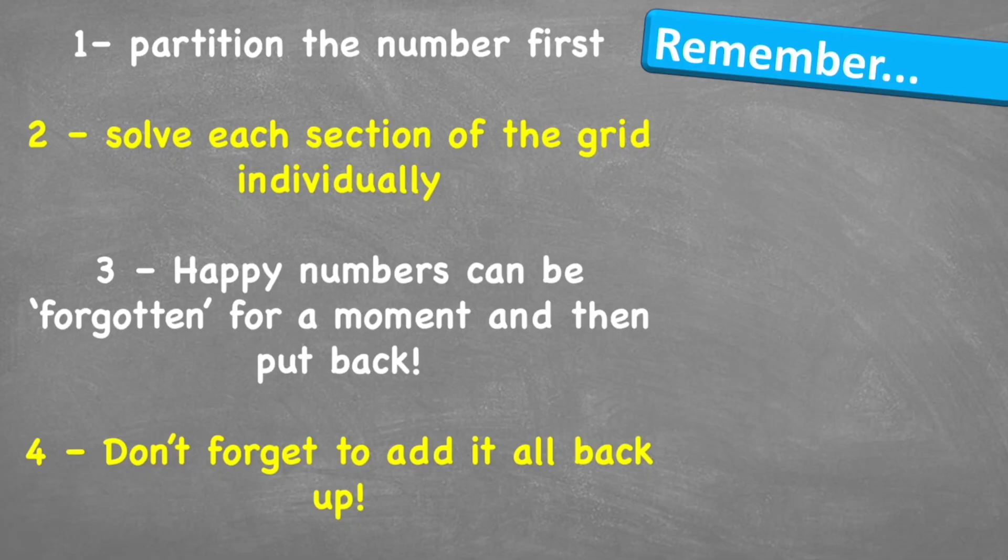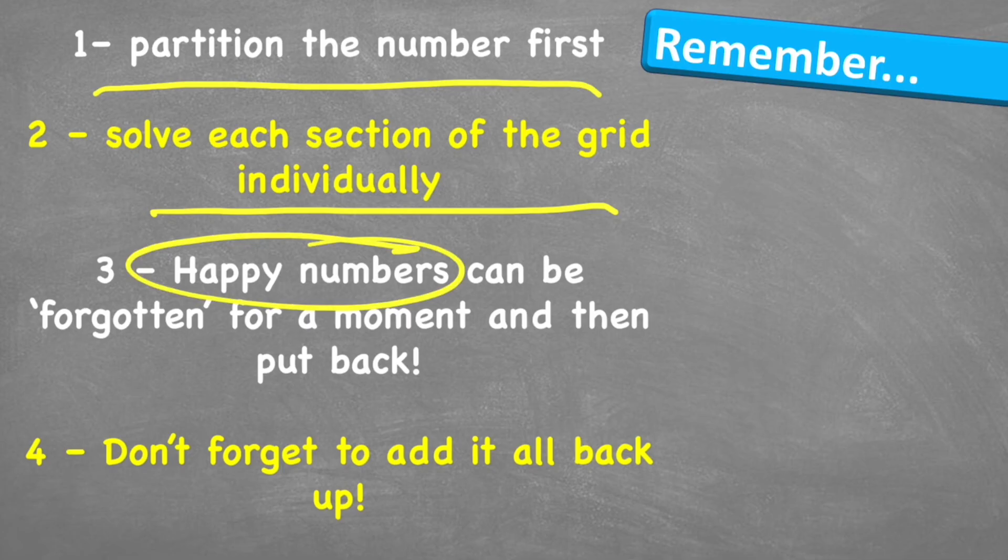Let's think about what to remember. First, we need to partition the number. This is how we're going to make it easier to do the individual sections. Then we're going to solve each individual section first, remembering that happy numbers can be forgotten temporarily and then put back at the end. Don't forget, we must always add up the individual sections to get our final answer.